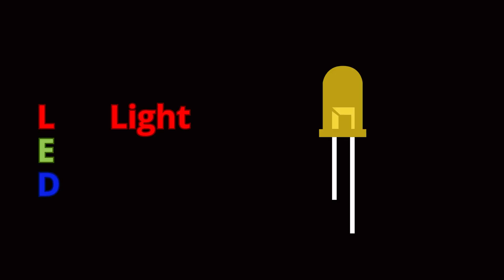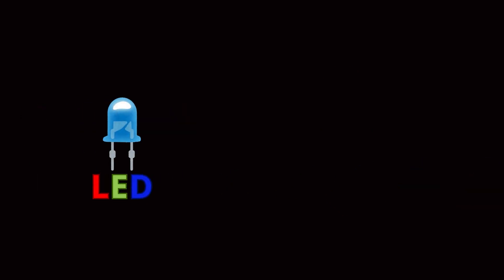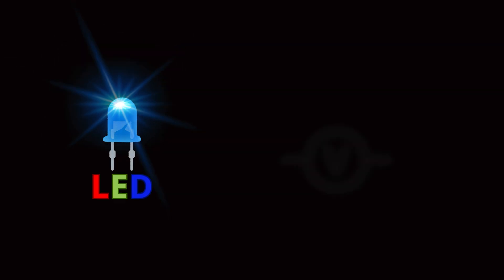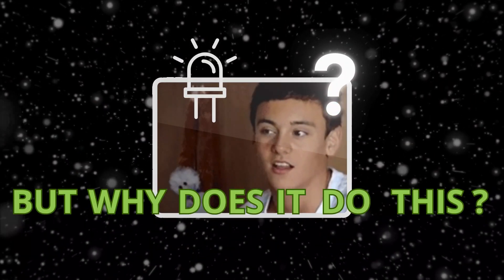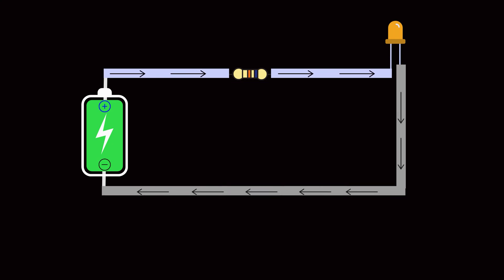LED stands for Light Emitting Diode. It's a tiny device that emits light when current flows through it. But why does it do this? It's all about the flow of electricity in one direction. An LED has two leads, one positive, the anode,